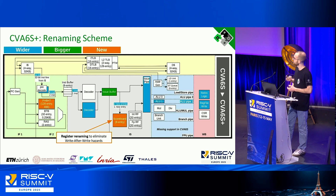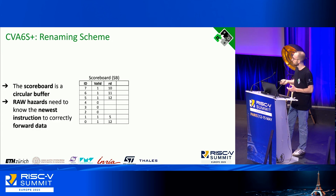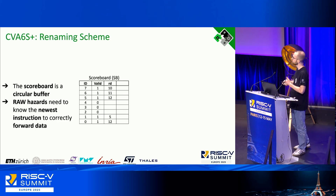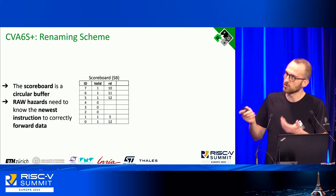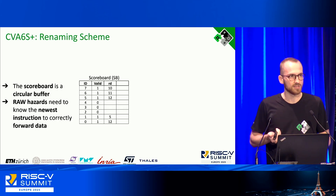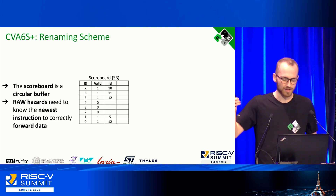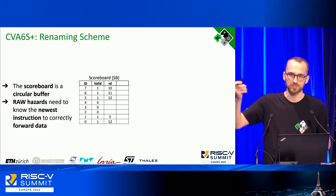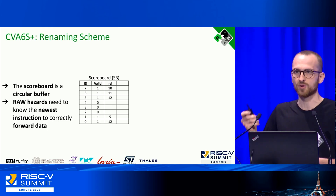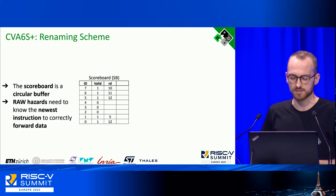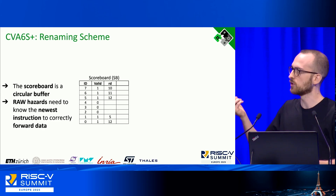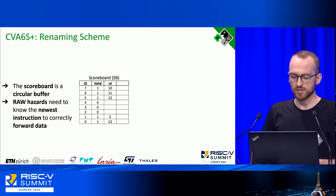We introduced the register renaming scheme, located in the scoreboard, which also acts as a reorder buffer. The scoreboard is a circular buffer that tracks all information about instructions being issued, executing, and completed — including the destination register. When a new instruction arrives with a read-after-write hazard, it needs to know which is the newest instruction to read results from — that is, which reorder buffer entry to read from. This renaming scheme is not present in the original CVA6.